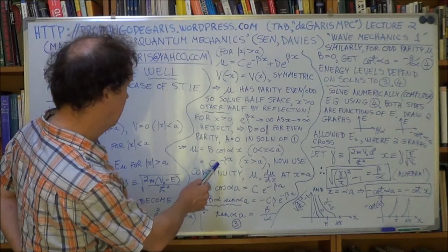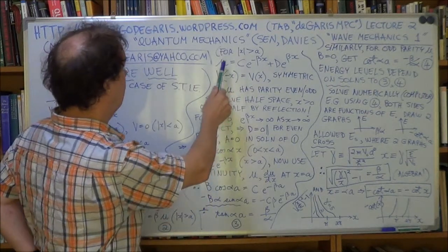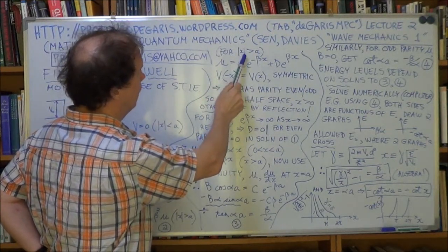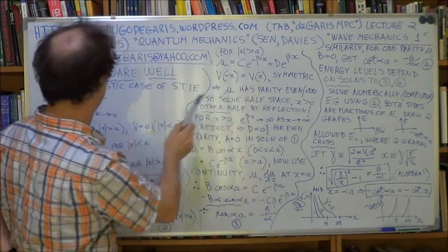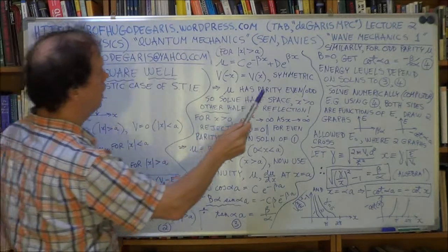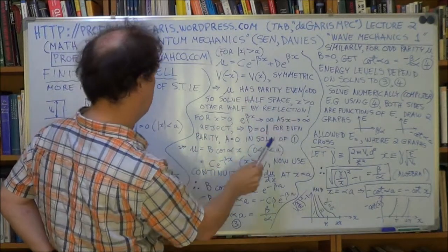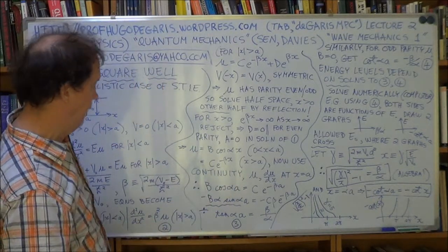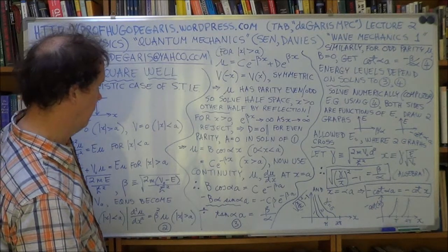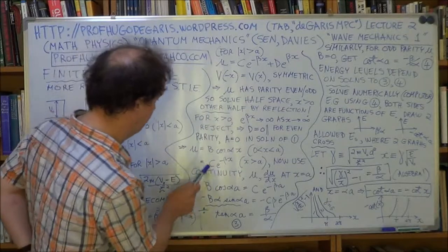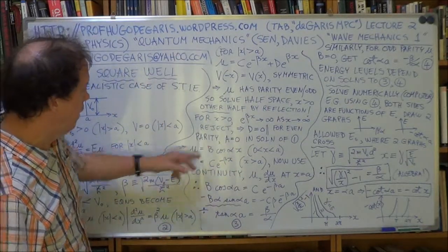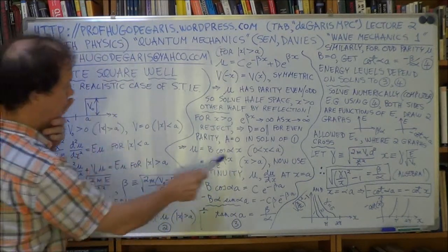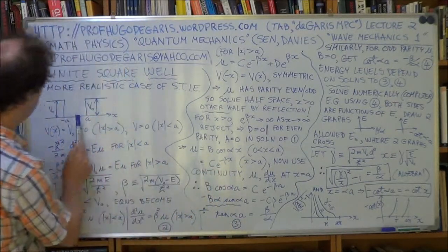Now, we've also got, this is for x greater than a. So in this region here we have u is of the form—where is it? Here. b cos alpha x. Sorry. Here. Sorry. Here. This one. Okay. Now, so we have a solution here of this form valid in this region.